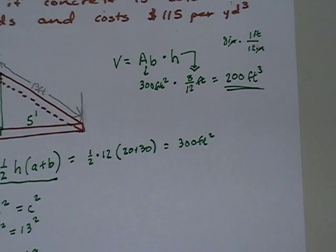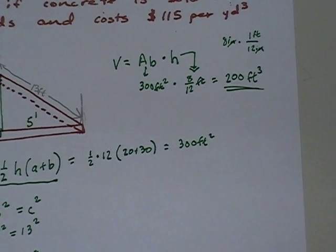All right, yay, I found the volume, 200 cubic feet. Except I've got a problem. They didn't ask me for the cubic feet. They didn't actually ask me for the volume at all. They told me that concrete costs $115 per cubic yard.